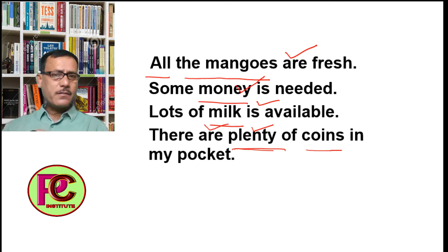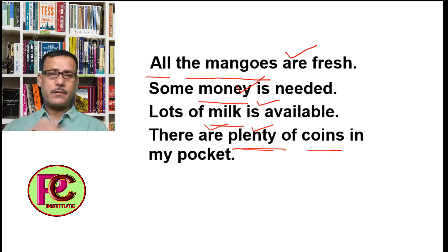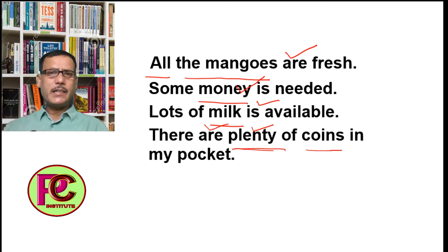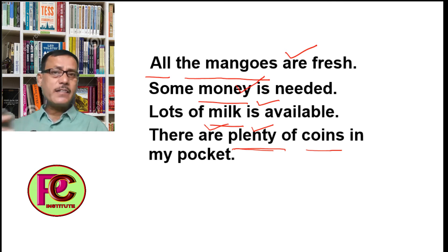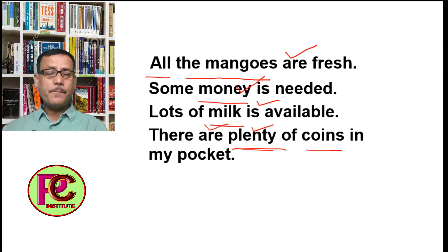When any sentence has no subject, we add a subject called an introductory subject. 'There' is one introductory subject, and 'it' is another. For example, if we want to say 'there is no light', we cannot say 'light is not there' because the subject of that sentence is not 'light'. So when there is no subject, we use 'there' as an introductory subject — 'There is no light.'